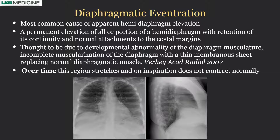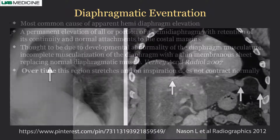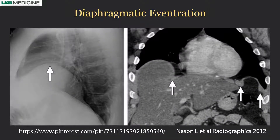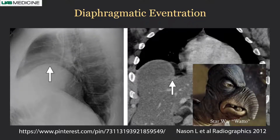Here is a patient with elevated right hemidiaphragm. On the lateral view, the anterior portion of the diaphragm is elevated while the posterior is not. This is a case of partial eventration, which is more common than complete eventration where the entire diaphragm is eventrated. On CT you can see part of the liver protruding into the chest.